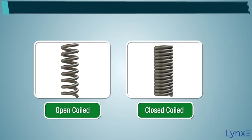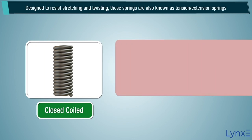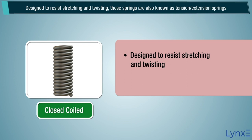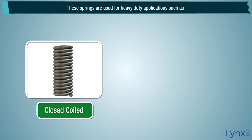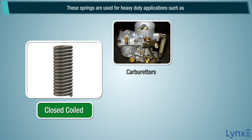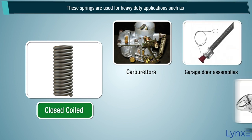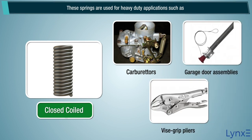Closed coiled helical springs are designed to resist stretching and twisting; these springs are also known as tension or extension springs. These springs feature an eye or a hook at the end for attachment. These springs are used for heavy duty applications such as carburetors, garage door assemblies, vice grip pliers, etc.